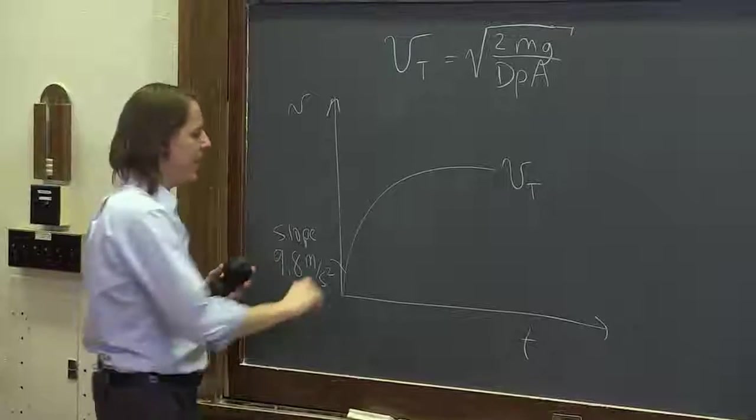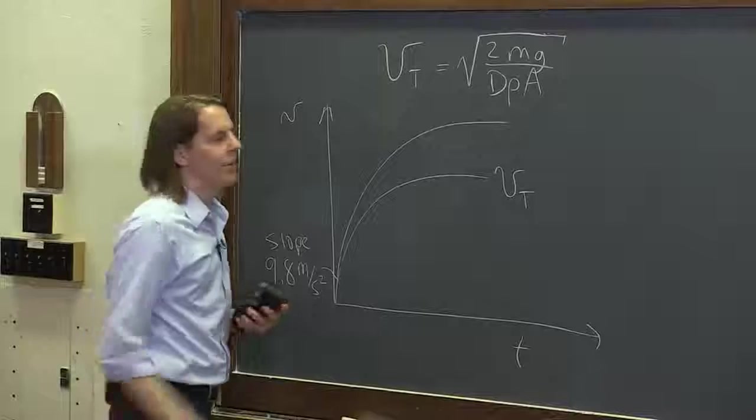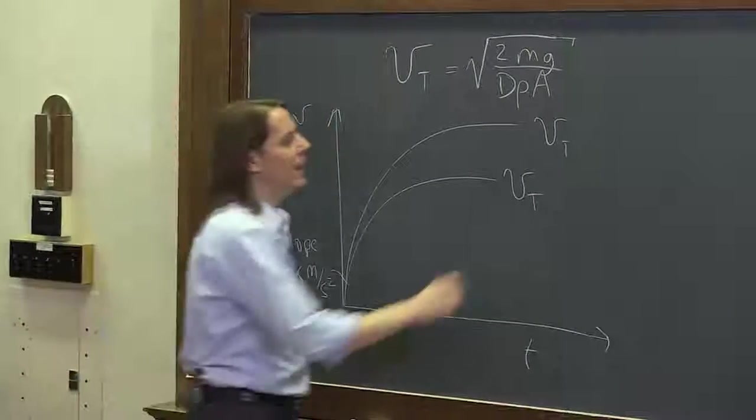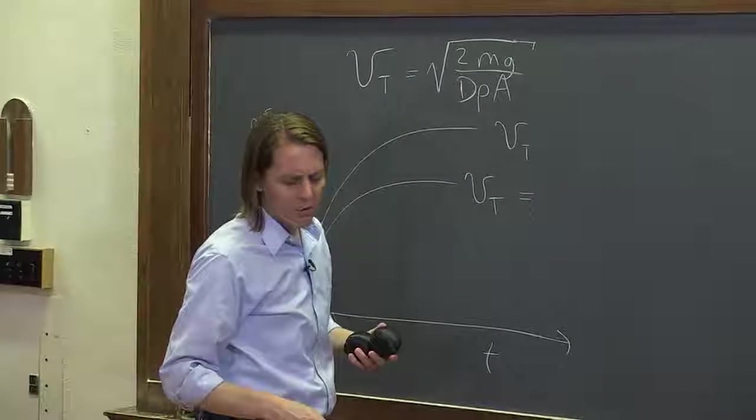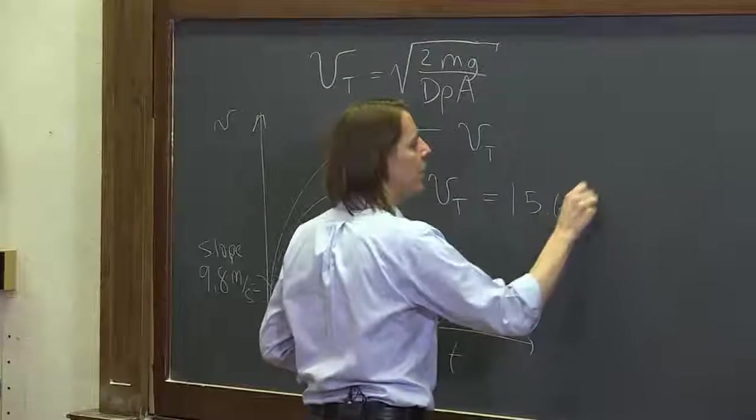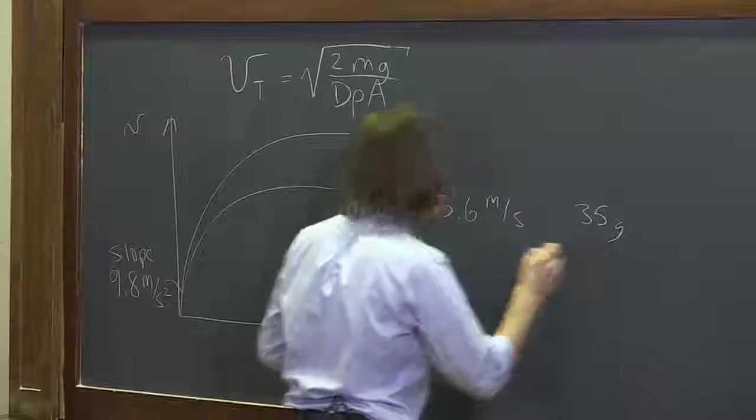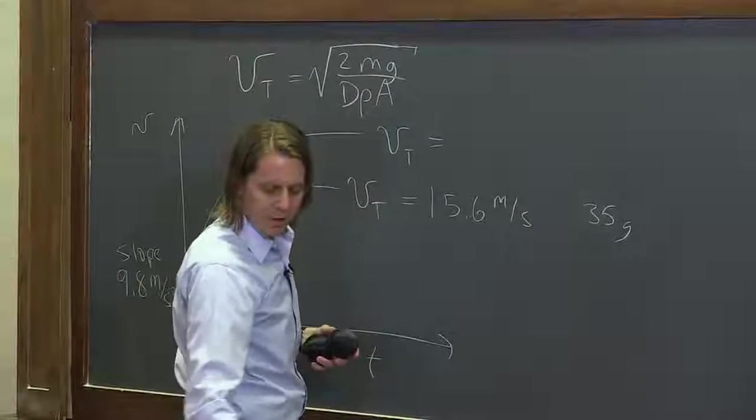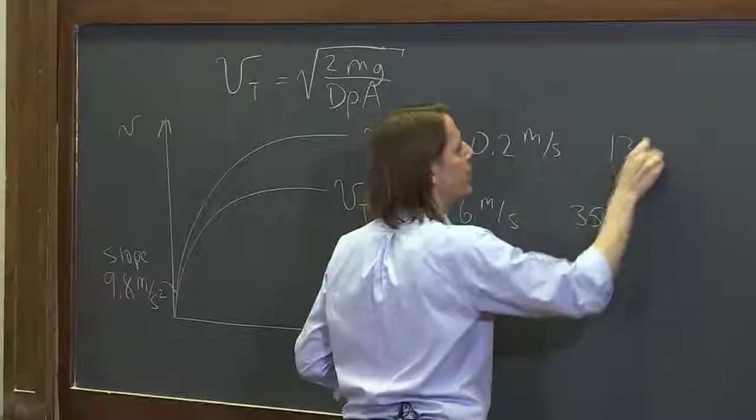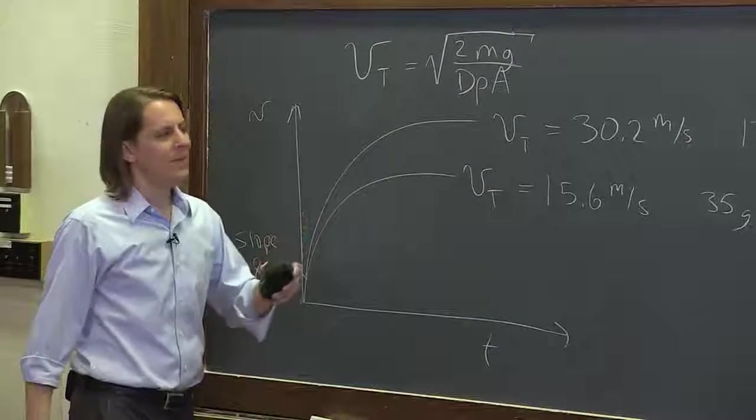If you plotted this for the heavier ball, it would look something like this. Also start at 9.8 meters per second squared, but then it would end at a different, higher terminal velocity for the heavier ball. I've actually calculated them using this formula. For the lighter ball, it only gets to about 15.6 meters per second, that's for the 35 gram ball. And the heavier ball gets to about 30.2 meters per second, that's for the 130 gram ball.